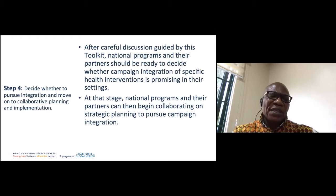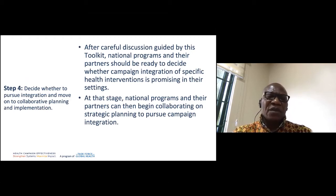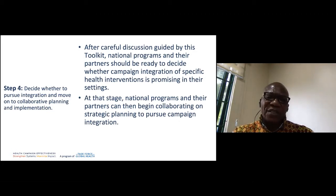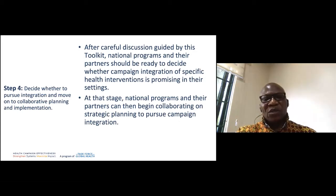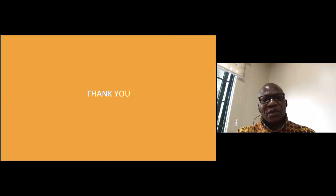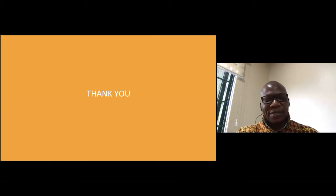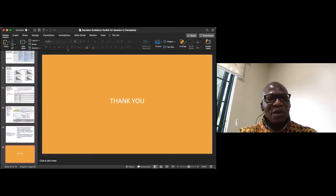Step four is deciding whether to pursue integration and moving to collaborative planning and implementation. After full discussion guided by the toolkits, programs and partners are ready to decide whether campaigns can be fully or partially integrated. At that stage, the national program and partners can begin collaborating on strategic planning to pursue campaign integration. That's the toolkit overview — I'll now invite our panelists.